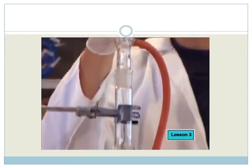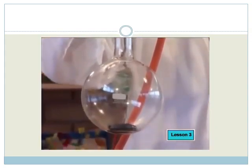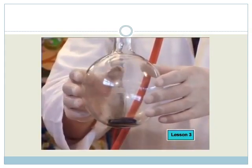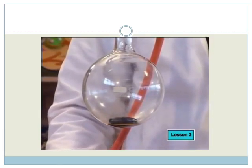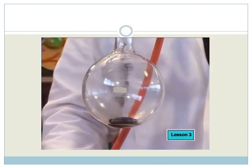This is called a reflux apparatus. We heat the mixture in the bottom of the round bottom flask until it boils. The gases rise into the condenser where they become liquid again by condensation and fall back into the mixture. Refluxing allows us to keep the reaction hot and boiling without losing any of the liquids inside. So let's get going.